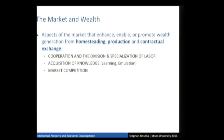So how do knowledge and the free market play a role in the three sources of wealth — original appropriation, trade, and production? We can focus on three aspects of the free market that enhance these ways of creating wealth. In an advanced free market economy where property rights are respected, we see cooperation, the division and specialization of labor, the continual acquisition of knowledge and learning by emulation, and market competition.